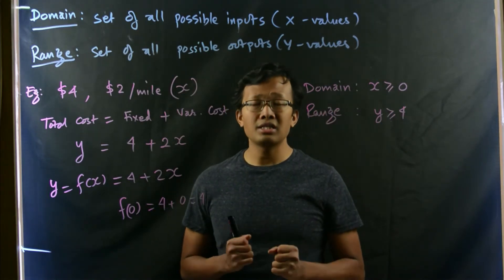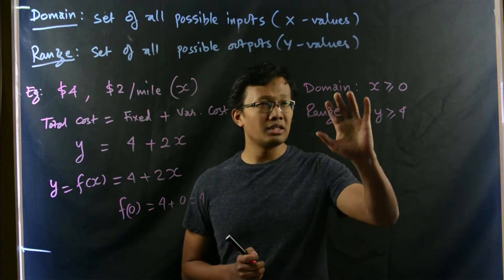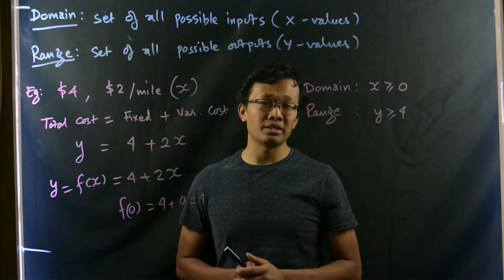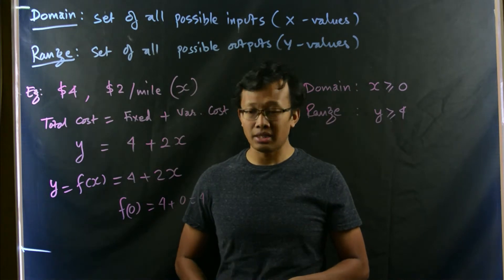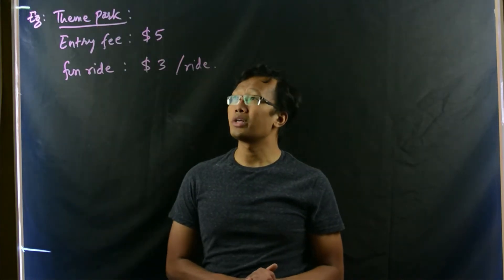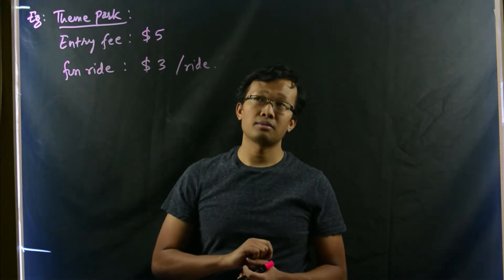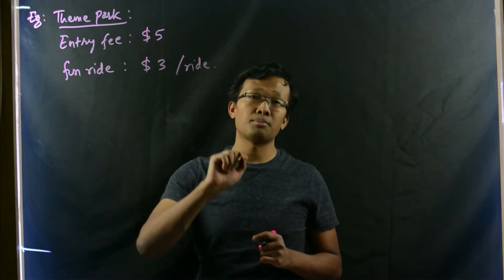This is a very simple way to understand domain and range. This is quite easy to realize what is the domain and what is the range. Now, let's go for a slightly advanced example using real life experience. Let's suppose we are going to a theme park where the entry fee is $5 per person.